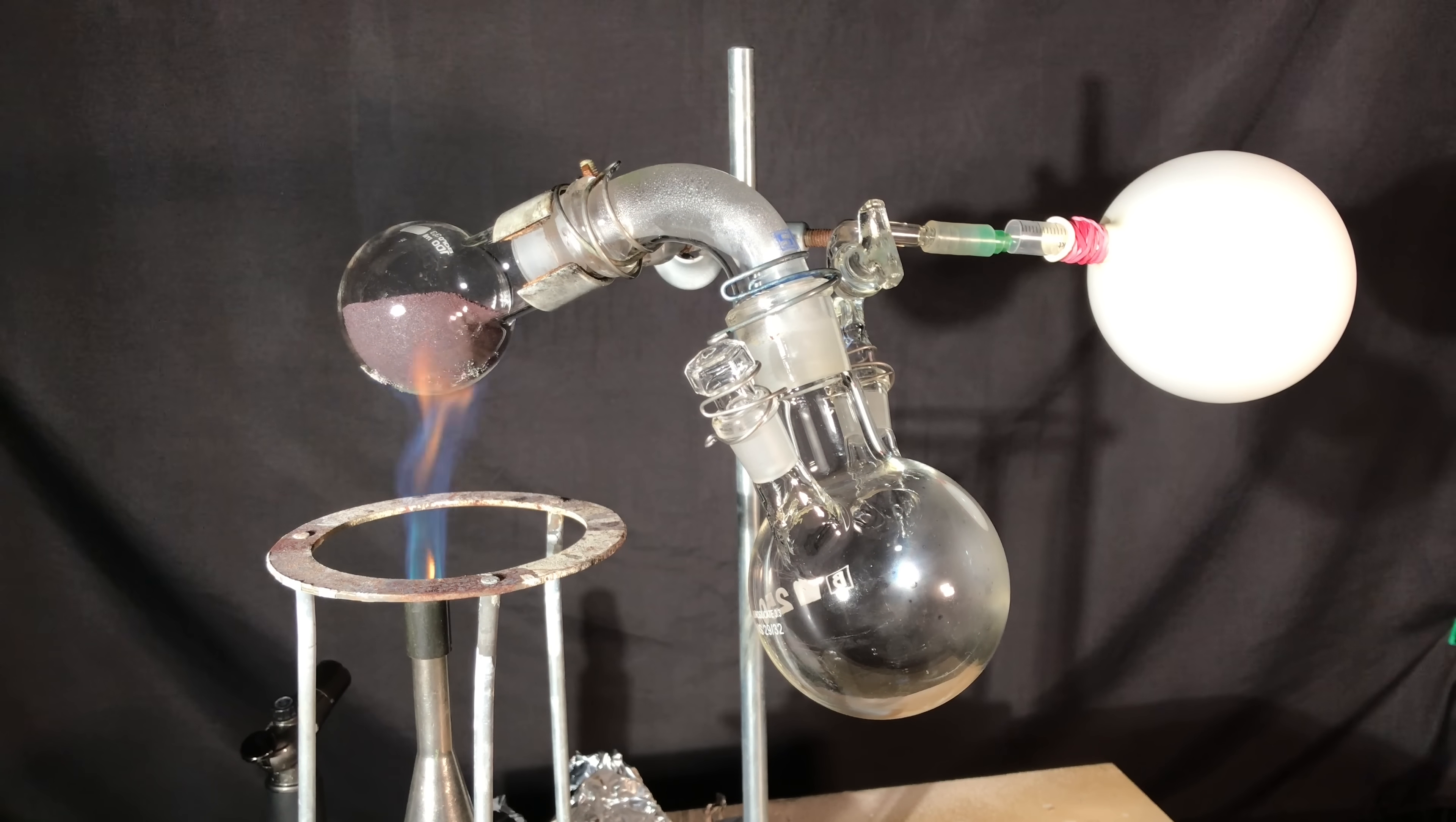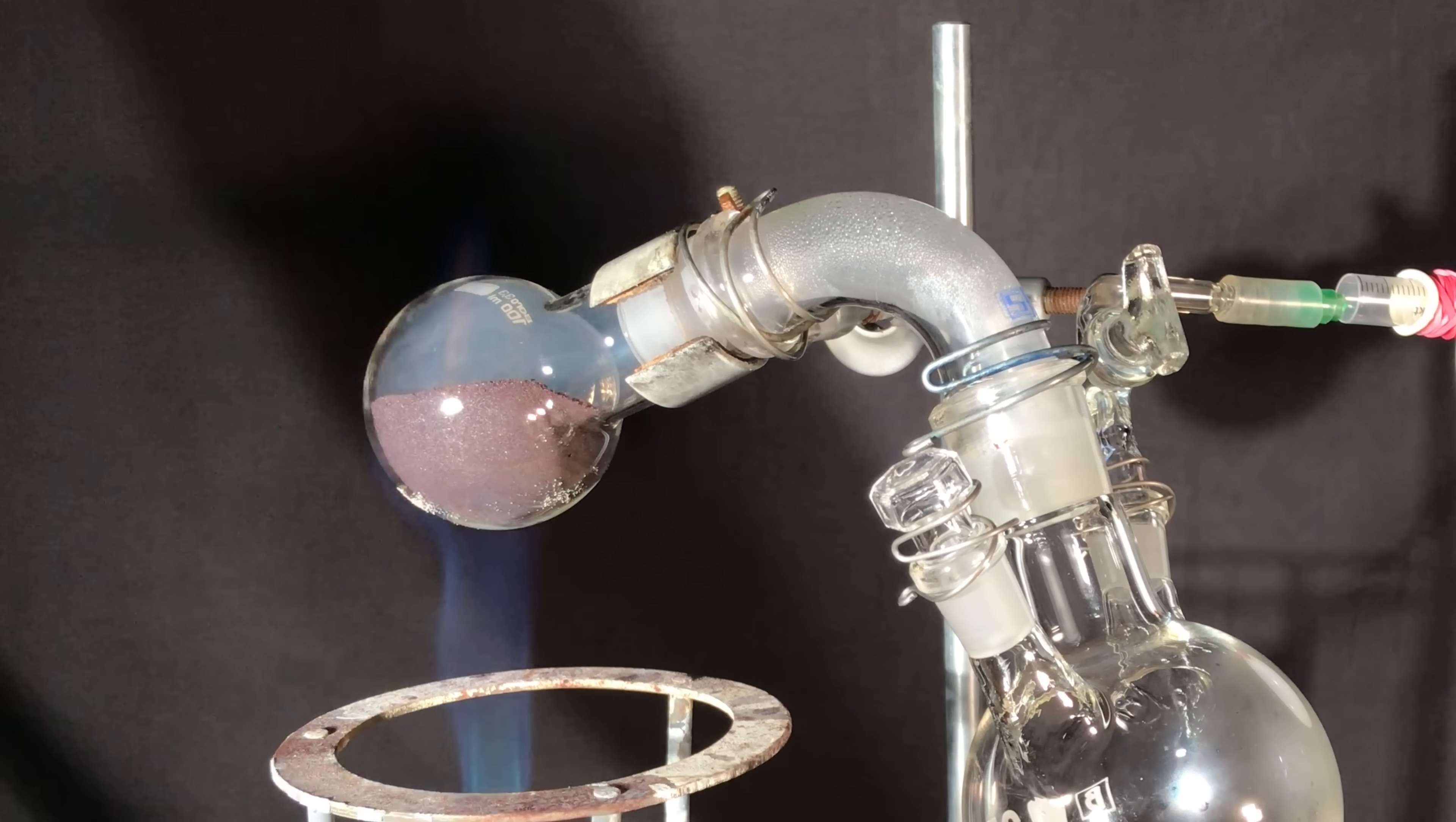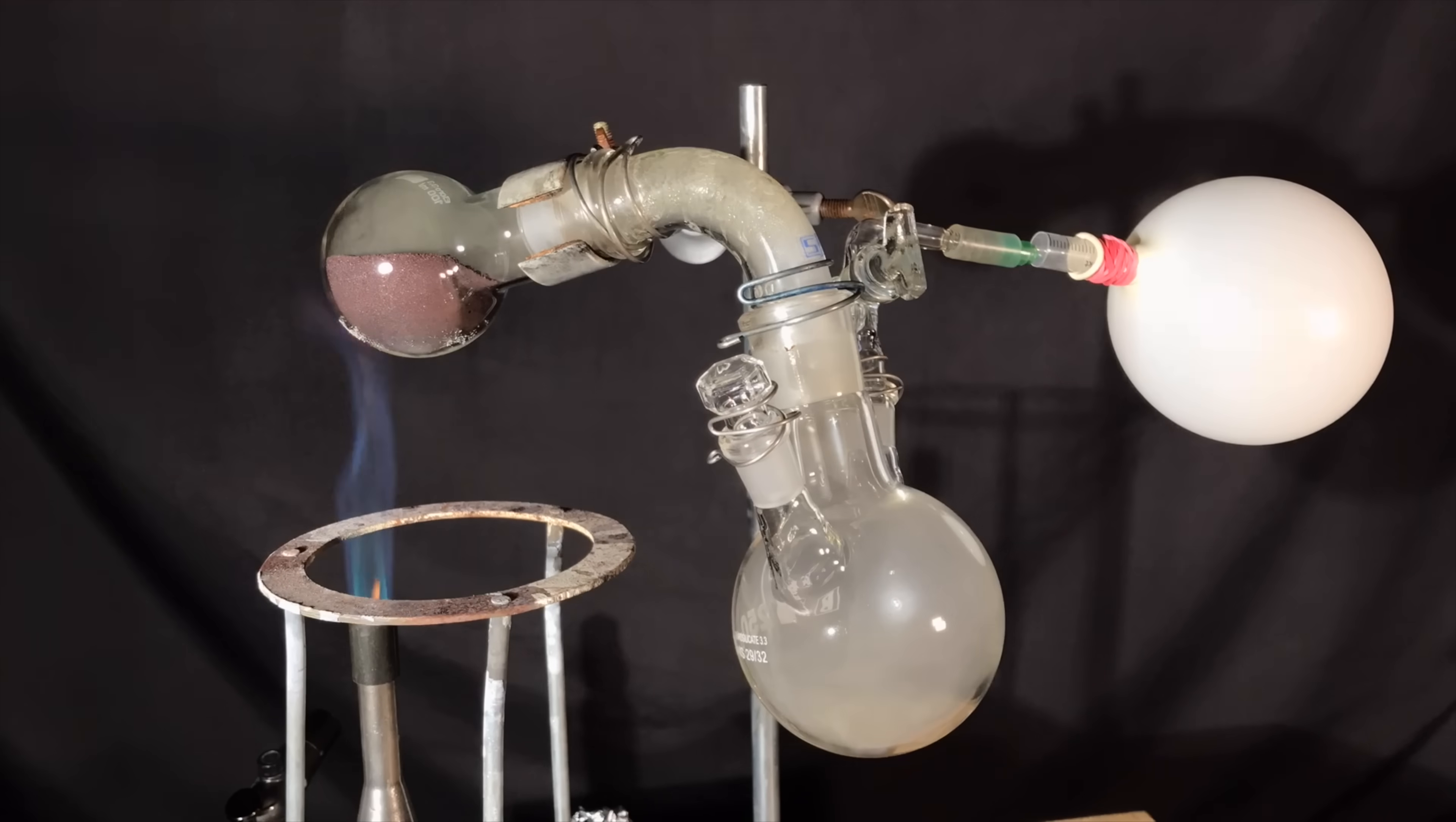The sand bath didn't get hot enough for white phosphorus to start forming. Therefore, the round bottom flask was exposed directly to the flame of the Bunsen burner. It did not take long until you were able to see the first vapors of highly toxic white phosphorus.